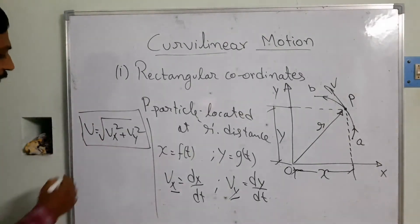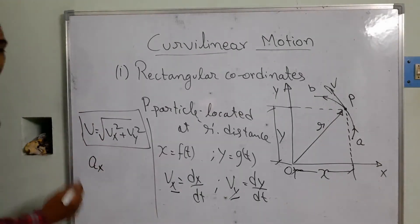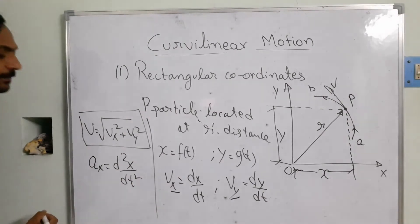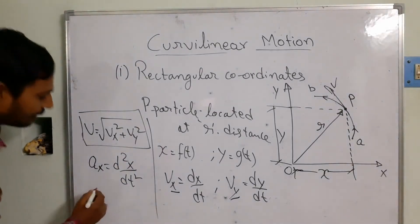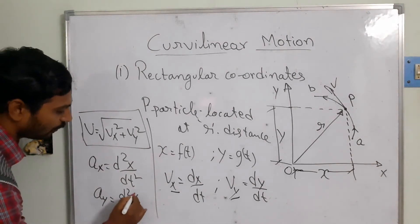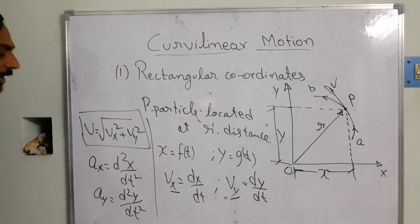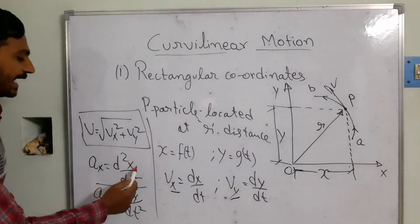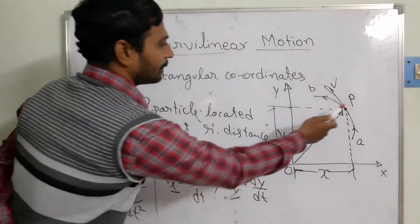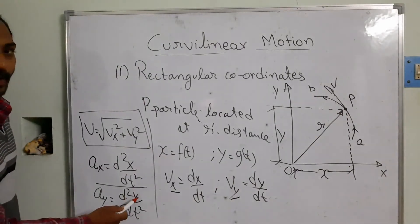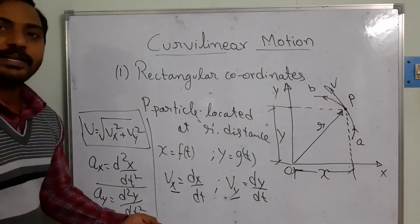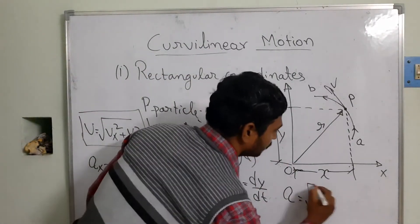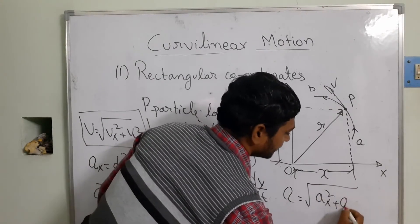The acceleration components are: ax = d²x/dt² in the x direction, and ay = d²y/dt² in the y direction. We have defined the acceleration of the particle in the x direction as d²x/dt², and in the y direction as d²y/dt². Since the particle is not moving in x or y alone, the resultant acceleration is a = √(ax² + ay²).